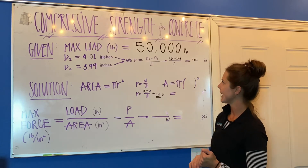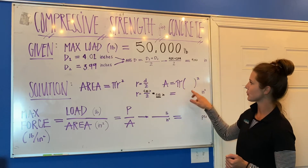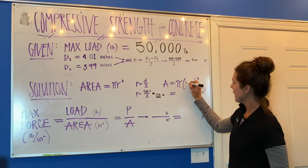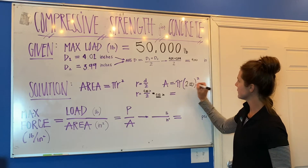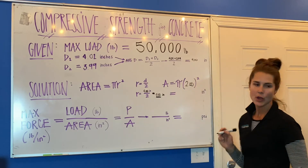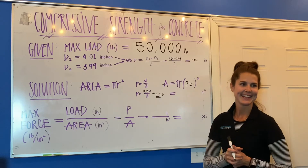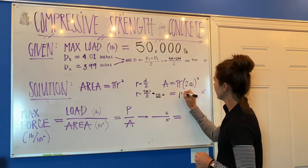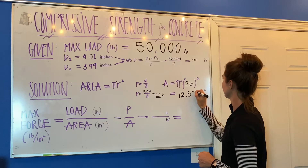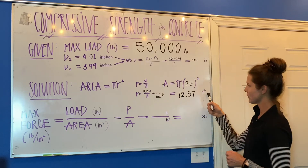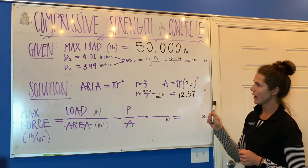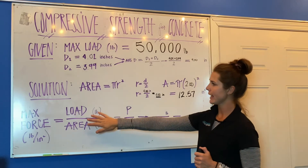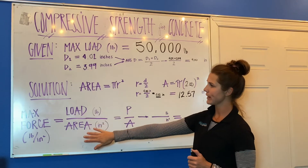Now we can apply the area equation, which is simply pi times radius squared — π × (2.00)² — which gives us 12.57 inches squared. Now that we have our area, we can apply the next equation.